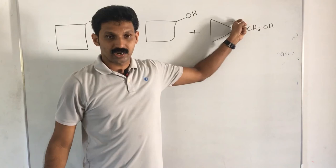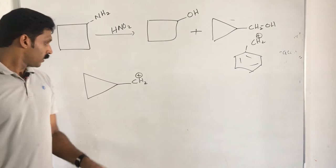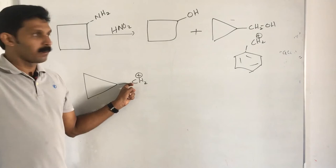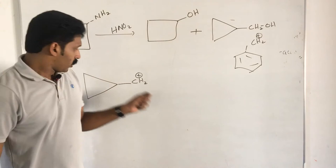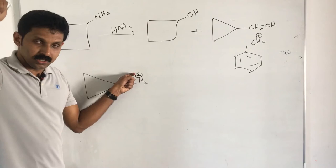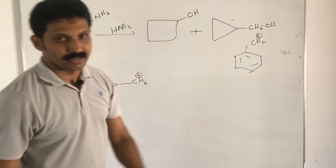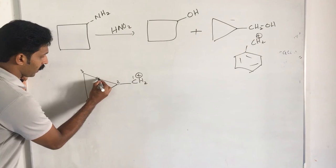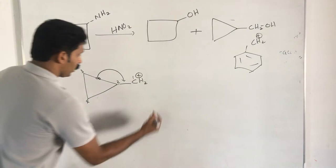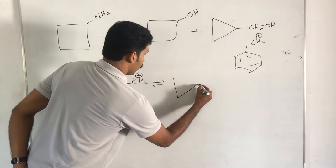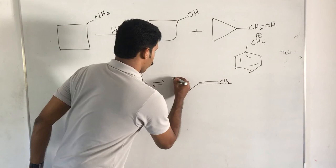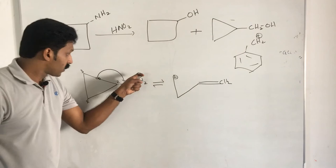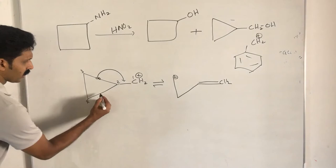Ring contraction happens because the cyclopropyl methyl carbocation is even more stable than a benzyl carbocation. The cyclopropyl group stabilizes the positive charge just as the phenyl group stabilizes its positive charge. This molecule is symmetrical. On the first, second, third, and fourth carbon atoms, the sigma electrons jump, giving a resonance structure with a CH2 and the positive charge delocalized.